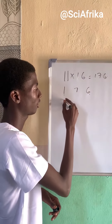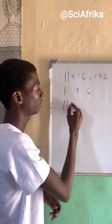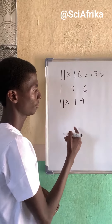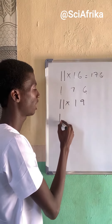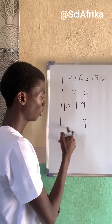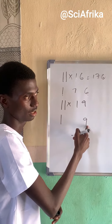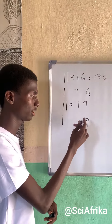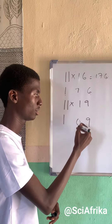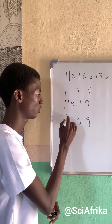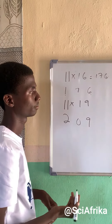Let us take another number — maybe 11 times 19. I would write 1, and write 9. And 1 plus 9 is 10. If the middle sum is 10, write 0 and carry 1. Then add 1 here, so the result is 209.